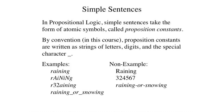In propositional logic, simple sentences take the form of atomic symbols called proposition constants. By convention, we write proposition constants as strings of letters, digits, and occurrences of the underscore character.